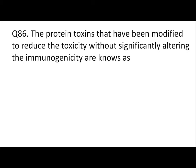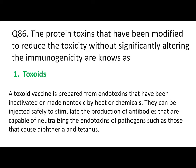Question 86: Protein toxins that have been modified to reduce toxicity without significantly altering immunogenicity are known as toxoids, vaccines, sera, or anti-sera? If a protein toxin is made less toxic so that it can be ingested to build resistance, it is called a toxoid. A toxoid vaccine is prepared from endotoxins inactivated by heat or chemicals. They can be injected safely to stimulate antibody production capable of neutralizing endotoxins, such as those causing diphtheria and tetanus.